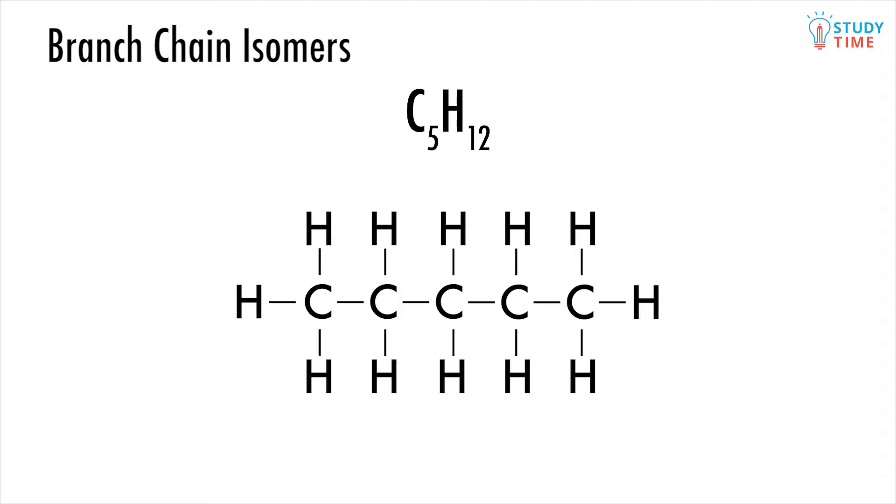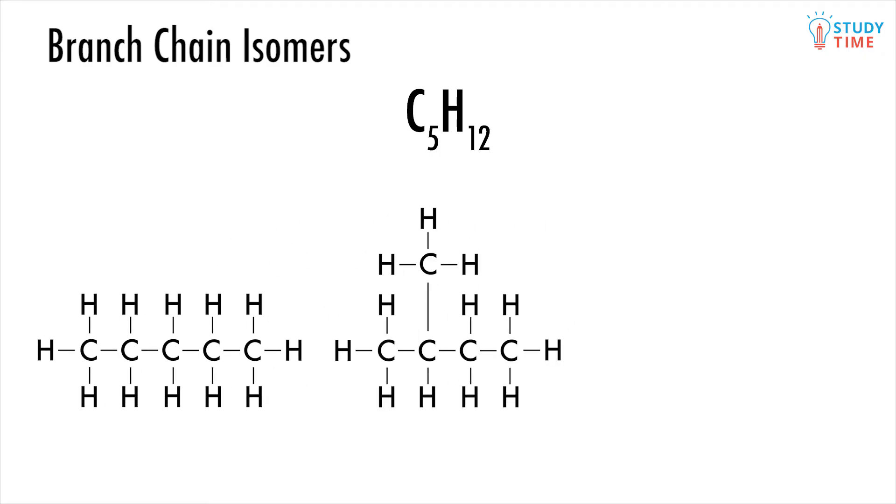And the only way you can make an alkane different to the one we've already found is to see if there are branched-chain isomers. The only way to do this really is to just draw them out and see what you can find. The next simplest isomer of this molecule is 2-methylbutane.